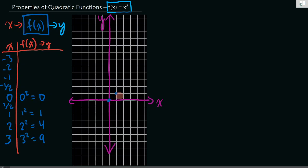And so those give us our first points of our function: (0,0), (1,1), (2,4), and (3,9).